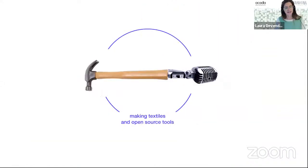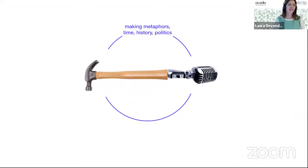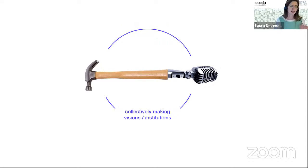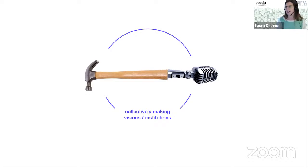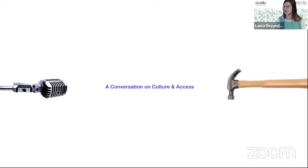In making textiles and open source tools, I've been able to make different metaphors, interrogate history and politics, and the hope is that that allows me to facilitate a space — as I think both the other presentations really beautifully illustrated — that's about collectively making not only new things but new visions and new institutions. With that, I want to transition us into the conversation. I will invite Kate and Vernell to turn their cameras back on.